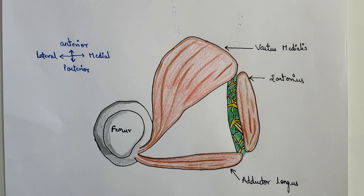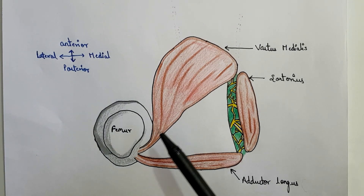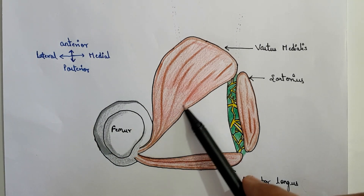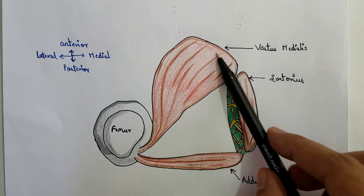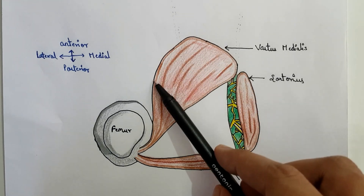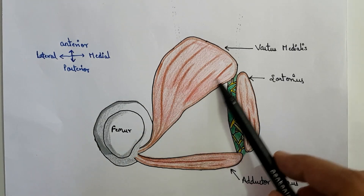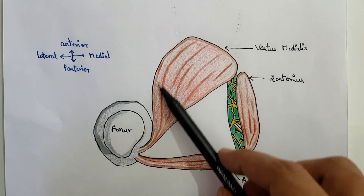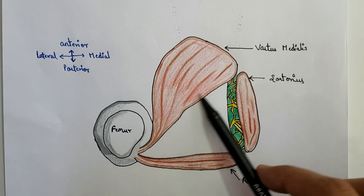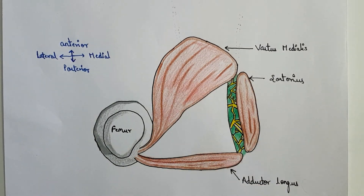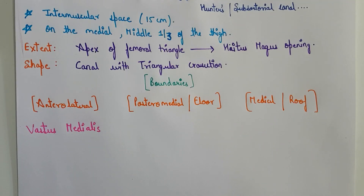In the transverse section of the adductor canal, you can easily see that the vastus medialis muscle forms the anterolateral border of the adductor canal. The posteromedial boundary, or the floor of the adductor canal, is formed by the adductor longus above and the adductor magnus below — that is, two muscles form the posteromedial border.